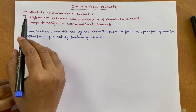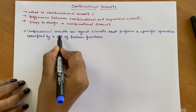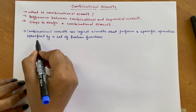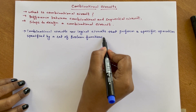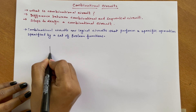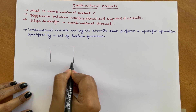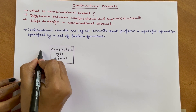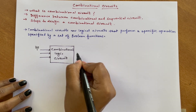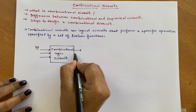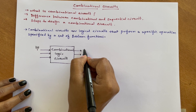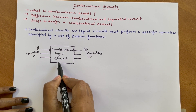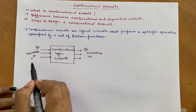What is a combinational circuit? Combinational circuits are logical circuits that perform a specific operation specified by a set of boolean functions. Suppose this is a combinational circuit — there will be inputs and there will be output variables. The output variables of a combinational logic circuit depend on the present input variables only.